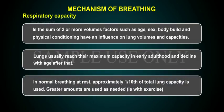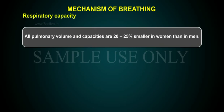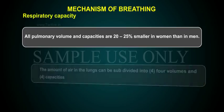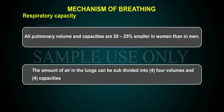In normal breathing at rest, approximately one-tenth of total lung capacity is used. Greater amounts are used as needed, that is, with exercise. All pulmonary volumes and capacities are 20–25% smaller in women than in men. The amount of air in the lungs can be subdivided into four volumes and four capacities.